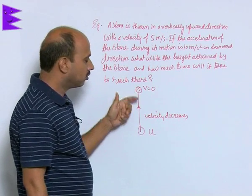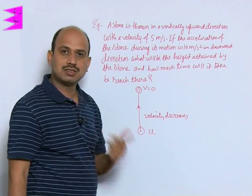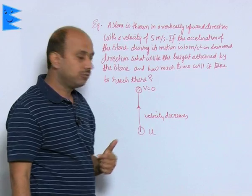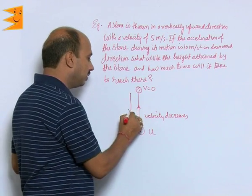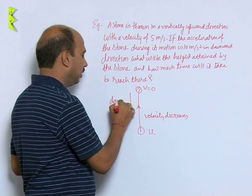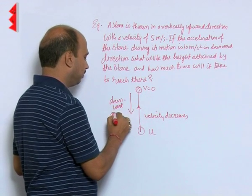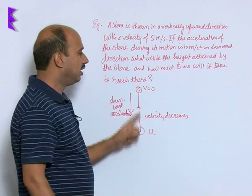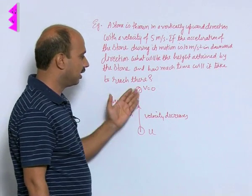But in this process one force is acting vertically downward that is called gravitational force or gravity of the earth. Because of that, this body has acceleration downward. This acceleration is opposing this velocity, so we can call it retardation.